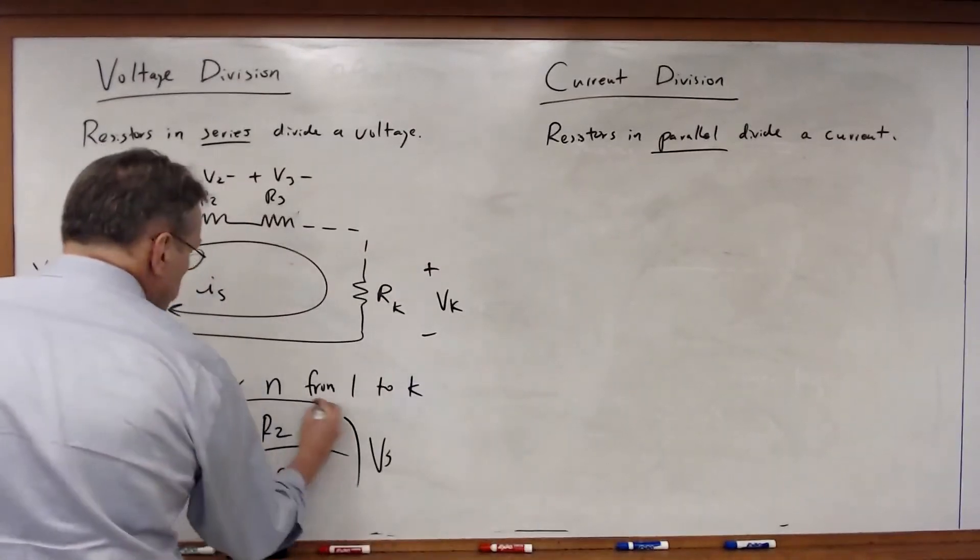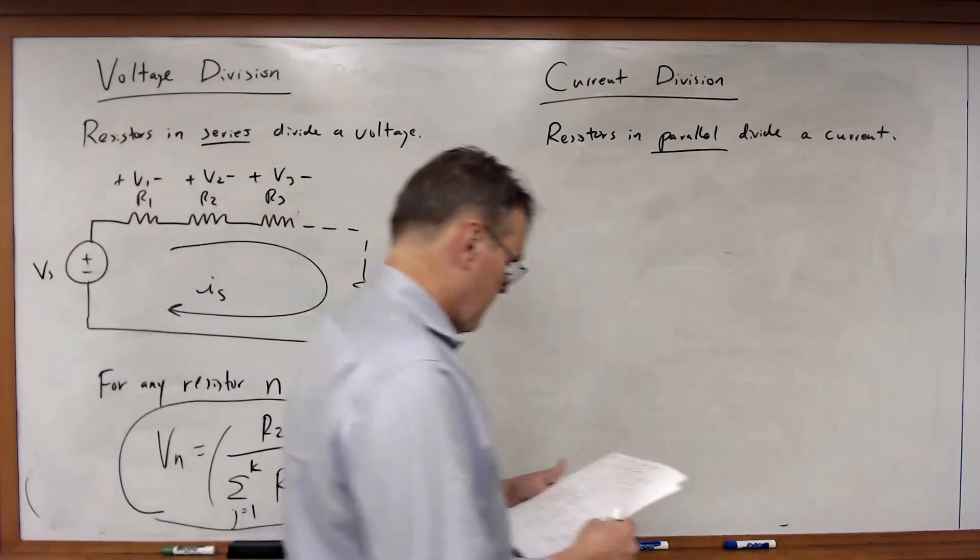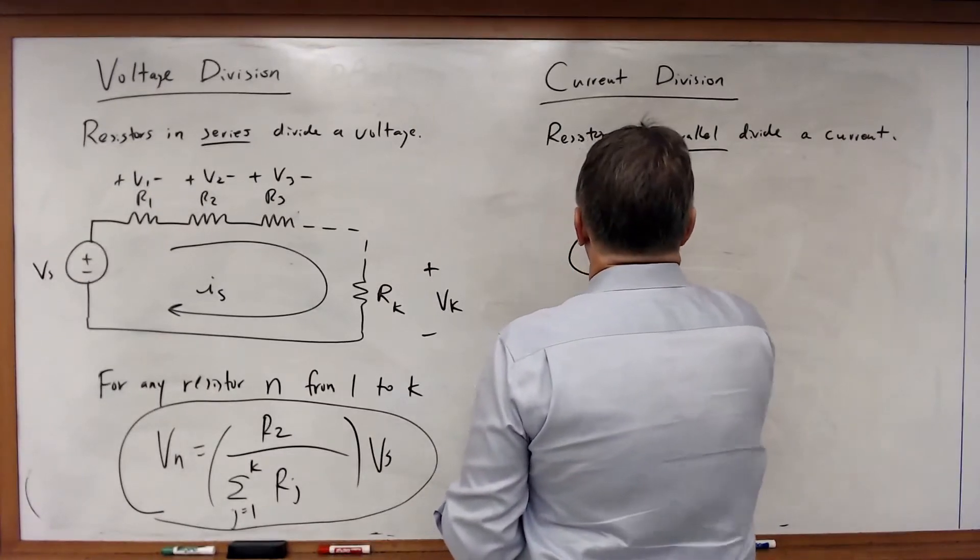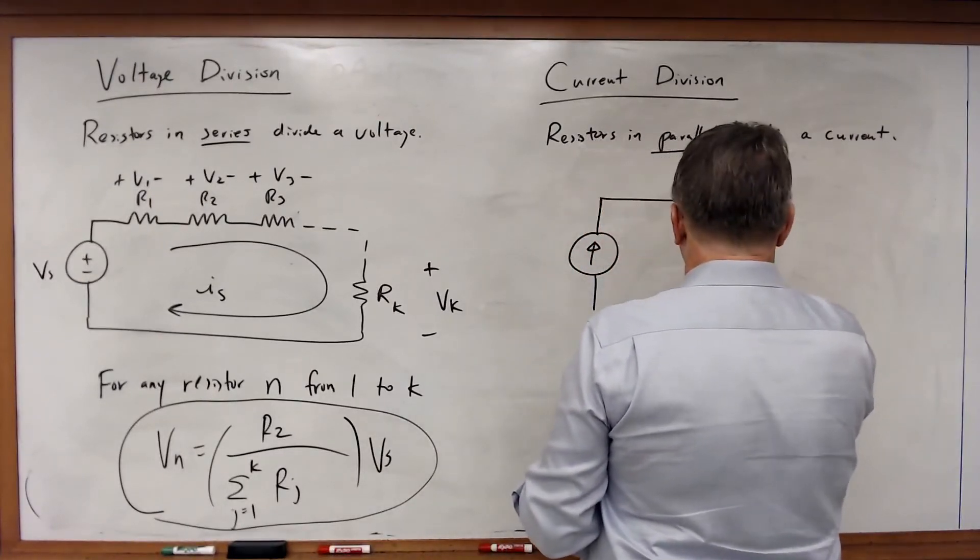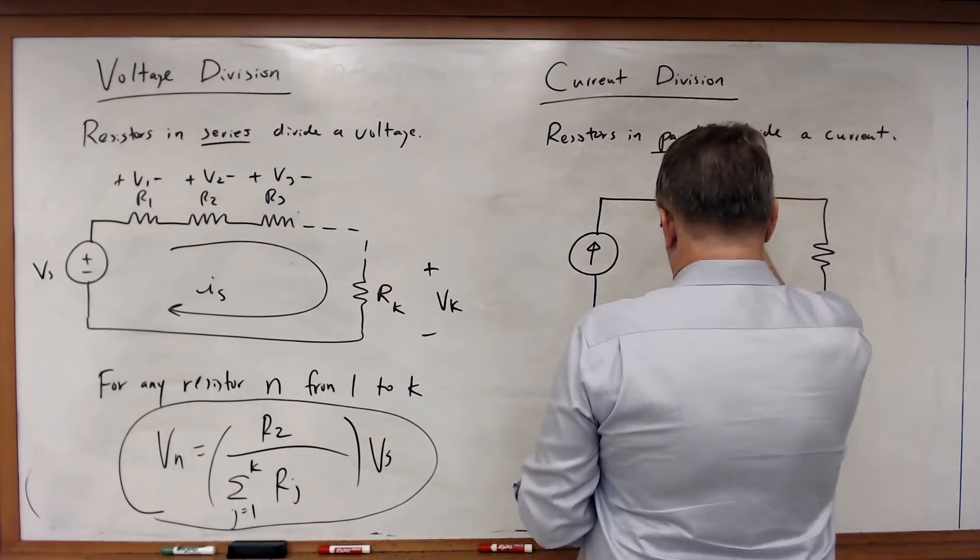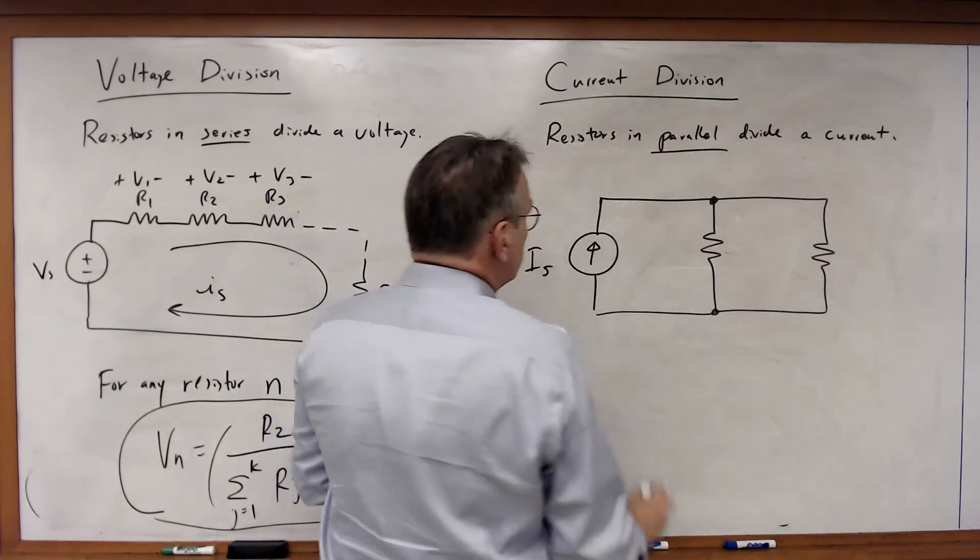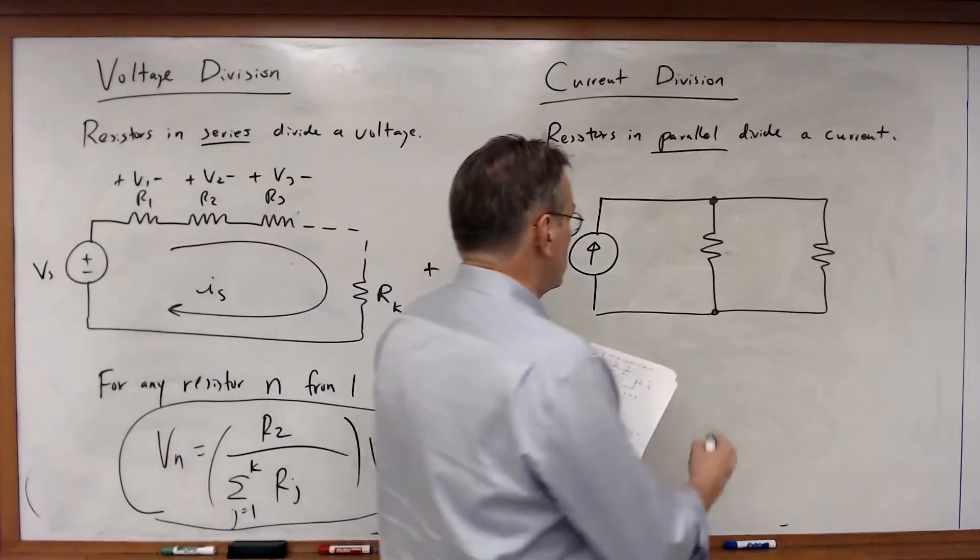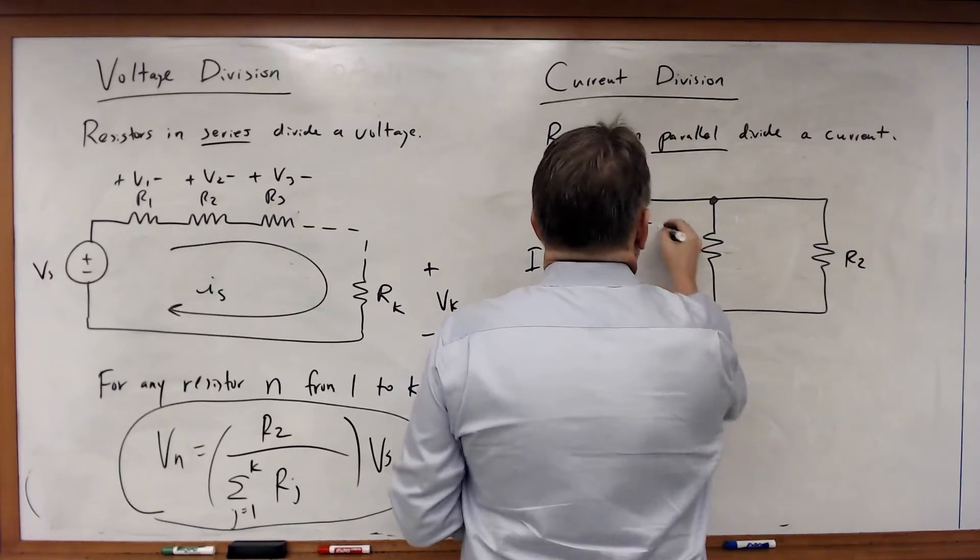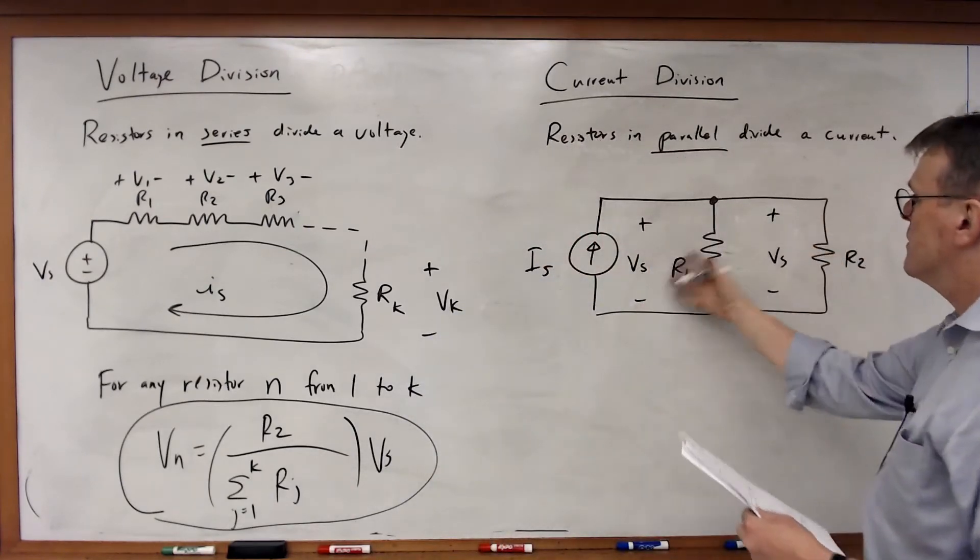So this is voltage division for any arbitrary number of resistors. Now let's look at current division. To make a current divider, I just have two resistors in parallel—this is R1, this is R2. Since this is a single node pair circuit, I'm going to have the same voltage across all the elements.